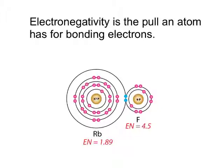What is electronegativity? It's the pull that an atom has for bonding or shared electrons. If you look here, we have two atoms: rubidium and fluorine. Notice that rubidium's electronegativity is 1.89 and fluorine's is 4.5. So fluorine has a great electronegativity. These are the electrons that they are both sharing or trying to share - the bonding electrons. Basically, fluorine has a much greater pull on those electrons than rubidium.